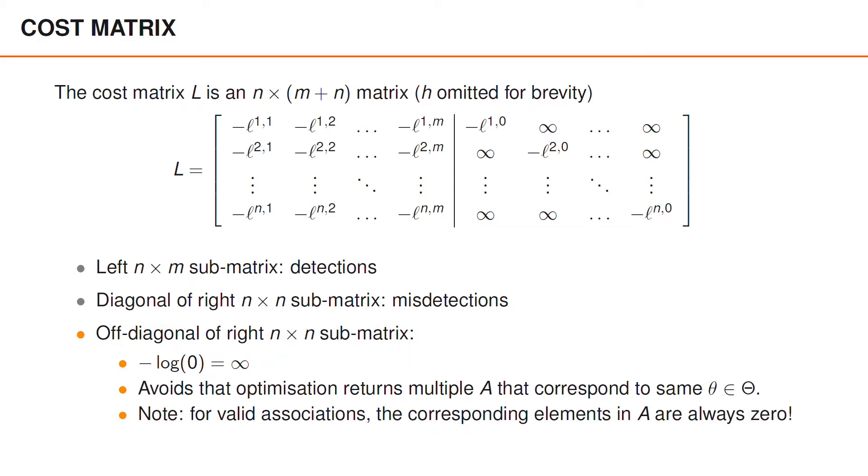The off-diagonal elements in the right submatrix are equal to negative logarithm of zero, which is undefined, but we set this equal to infinity. In other words, this corresponds to setting the likelihood to zero. By doing this, we avoid that the solver returns multiple assignments that correspond to the same valid association.